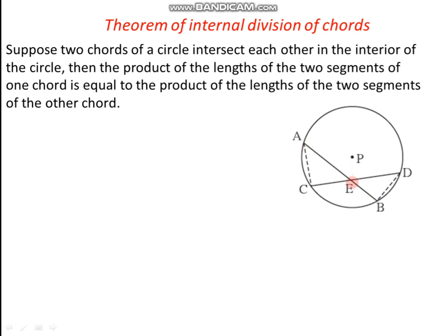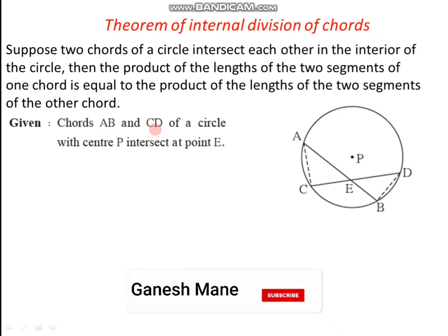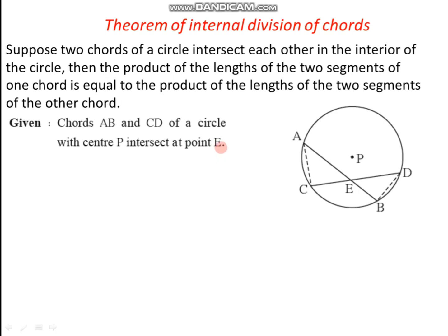So if you take a product of AE and EB, it must be equal to the product of the length of two segments of the other chord. The two segments of the other chord are CE and ED. So the product CE into ED must be equal to AE into EB — that is what we have to prove. Given: chord AB and chord CD of a circle with center P intersect at point E. To prove: AE into EB is equal to CE into ED.